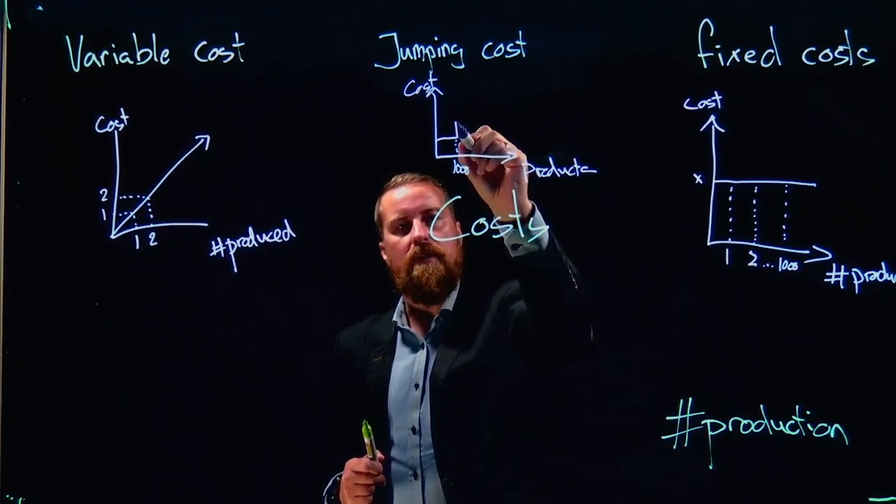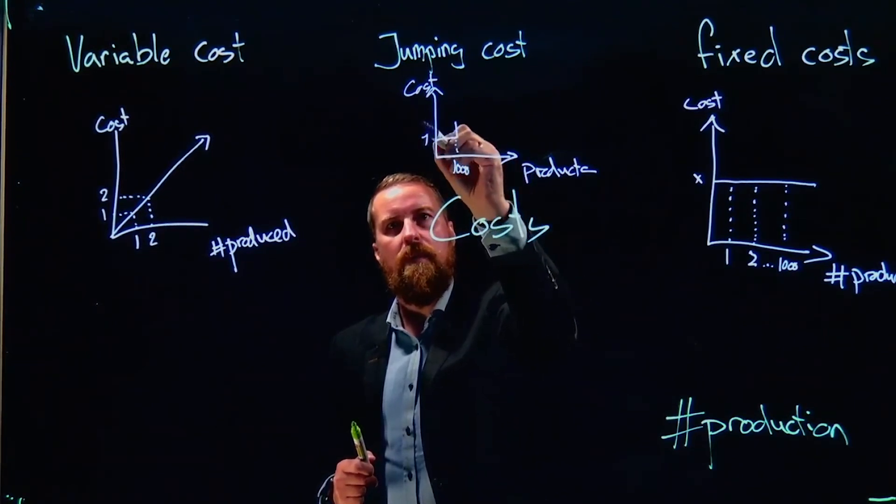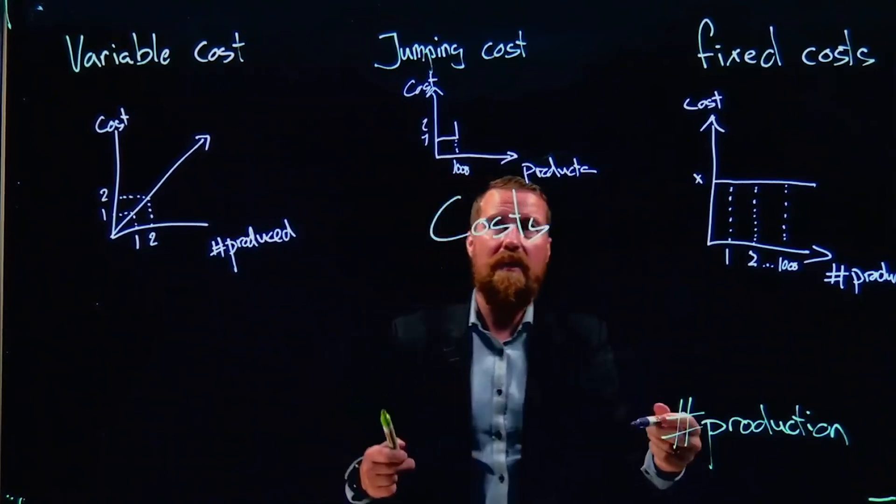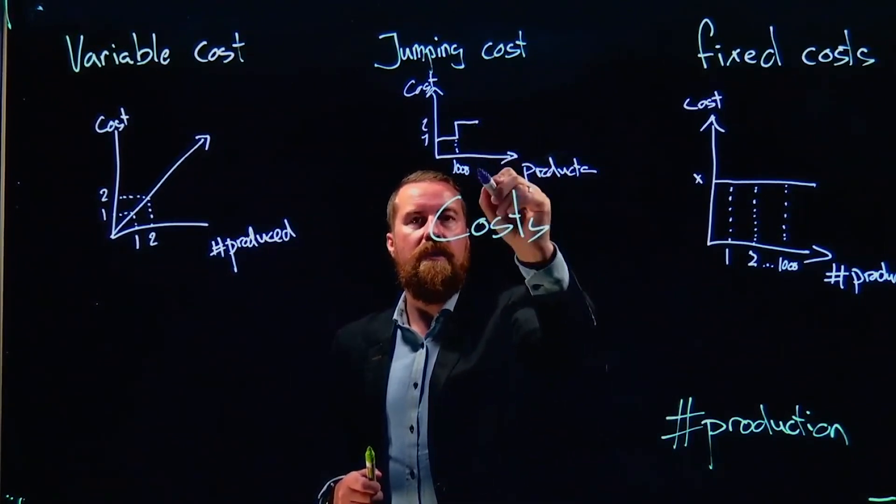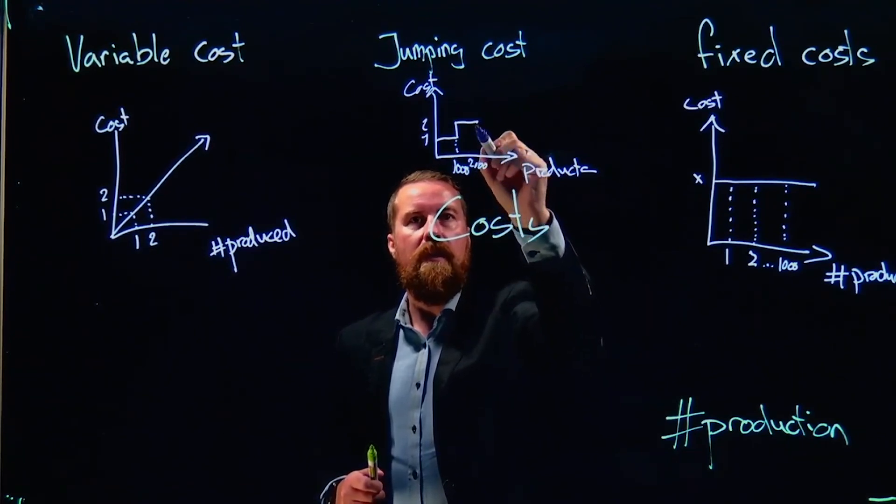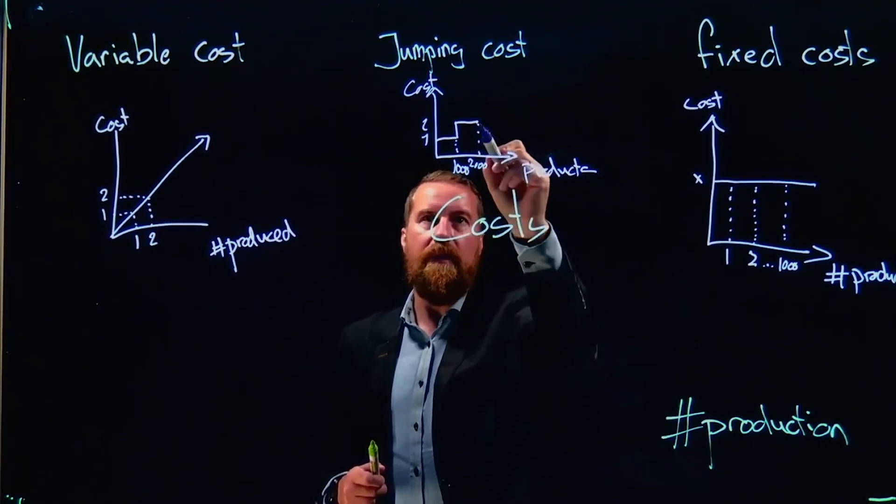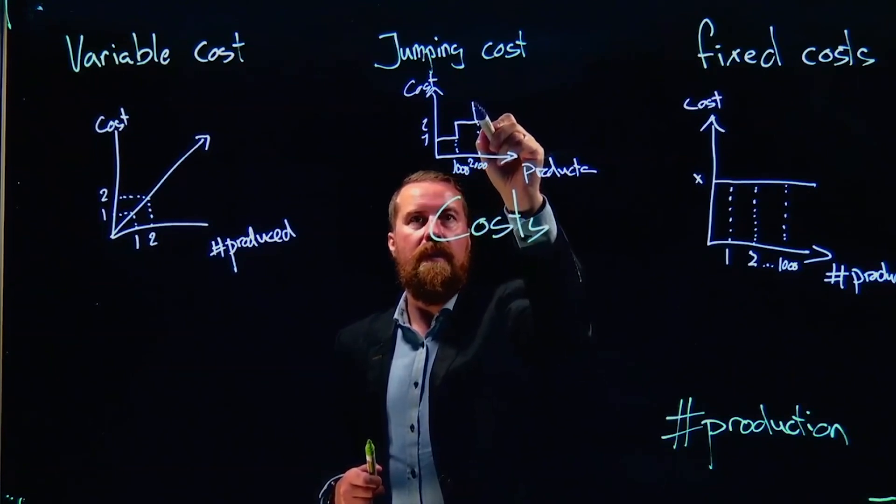It can produce a thousand units. Then the cost goes up. We need to buy another machine, and that machine can save another thousand. And we need to buy another, and so forth.